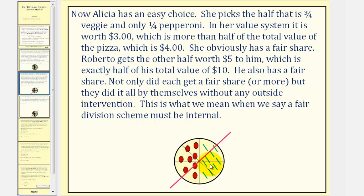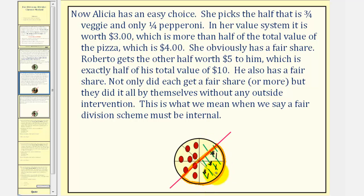Now it's Alicia's turn to choose, and she has an easy choice. She picks the half that is three-fourths veggie and only one-fourth pepperoni. In her value system, this half is worth three dollars, which is more than half of the total value she assigned to the pizza, which was four dollars. She put zero value on the pepperoni side and four dollars of value on the veggie side. Since there are four veggie slices, each is worth one dollar, making these three veggie slices worth three dollars total.